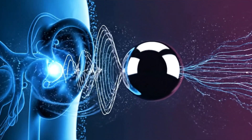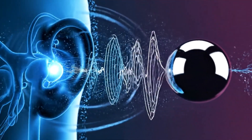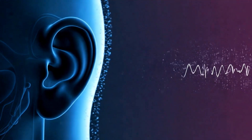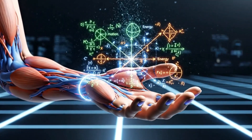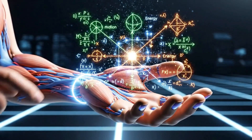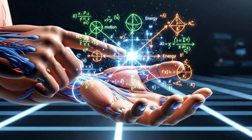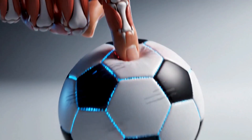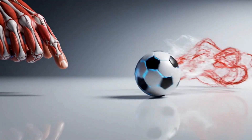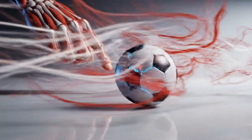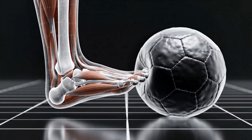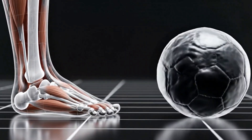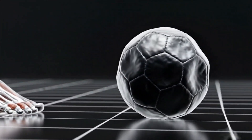Interestingly, the speed of sound is involved, because air compression slightly alters how the air moves — though the effect is minor in football, it shows how many different physics concepts are at work simultaneously. Even the air pressure inside the ball can have a tiny influence by slightly affecting the ball's overall shape and firmness. A slightly underinflated ball might flatten more upon impact, which could slightly reduce the clean application of spin.